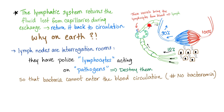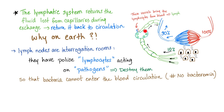But why bother with all of this? Because the lymph nodes are interrogation rooms. They have officers — or lymphocytes — acting on pathogens and destroying them, so the bacteria cannot enter the blood circulation. Hashtag no bacteremia, thanks to lymph nodes.